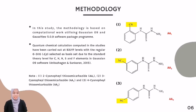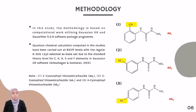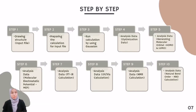For the methodology part, in this study the methodology is based on computational work utilizing Gaussian09 and GaussView 5.0.9 software package programs. The quantum chemical calculations have been carried out at the B3LYP level with 6-311G(d,p) selected as the basis set. Several parameters involved in the computational analysis include IR, NMR, UV-Vis, MEP, HOMO, and LUMO, which can be observed in this software. Based on the analysis and database obtained from both software packages, the results will be analyzed on the effects of electron-withdrawing groups.